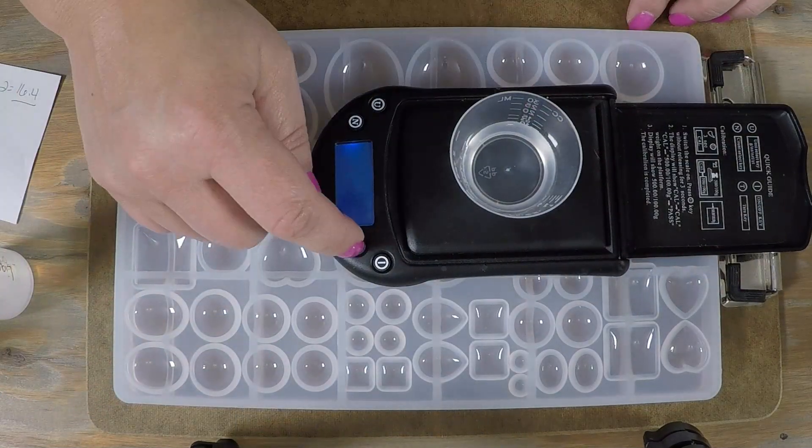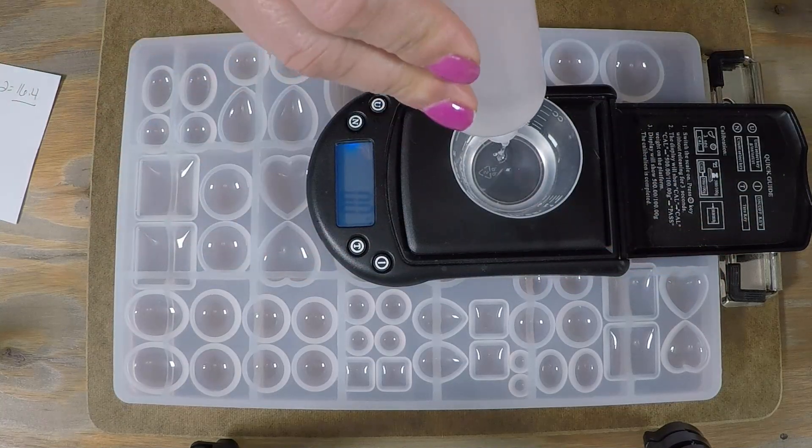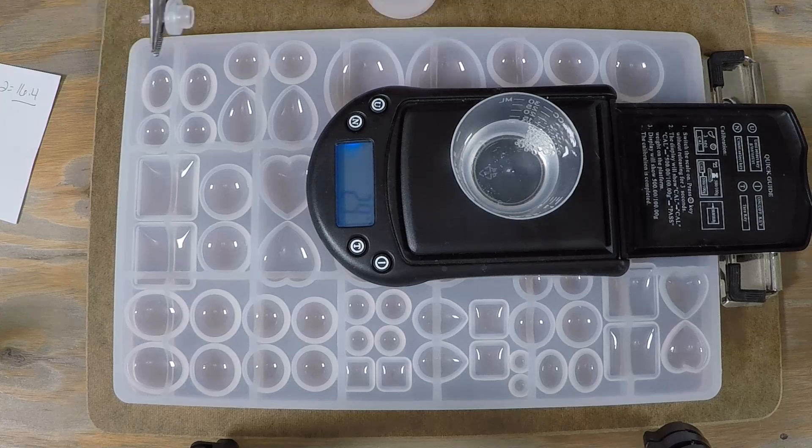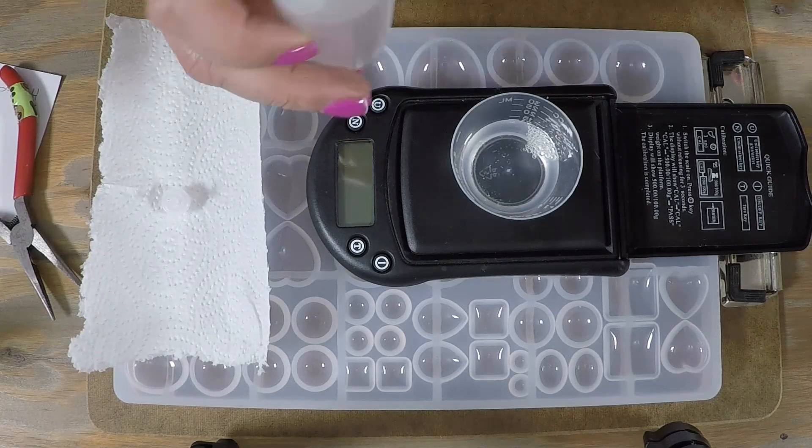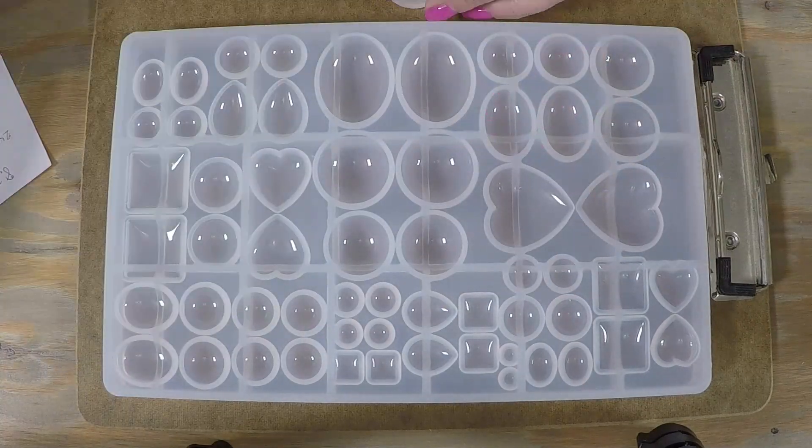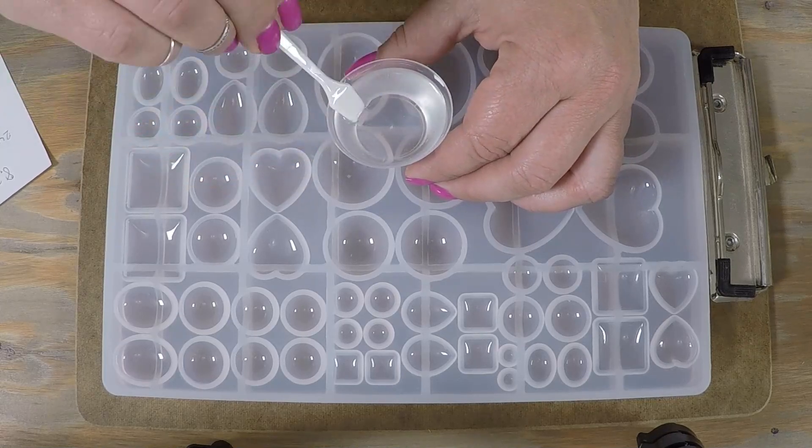I'm doing grams and I had 8.2 grams, which is 16.4 of the resin. When I started pouring, I didn't like that the cap was too small and created bubbles, so I took that off and added more to get the two-to-one ratio.